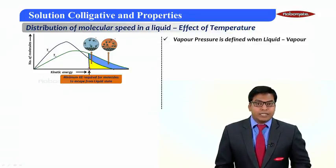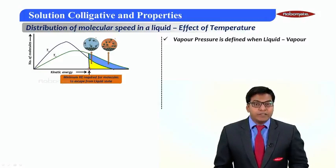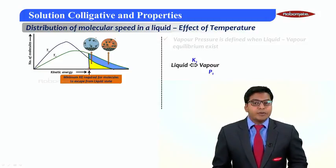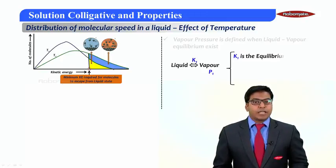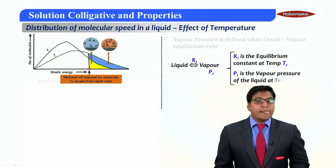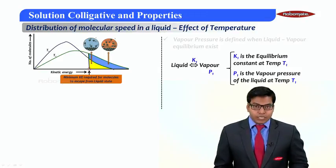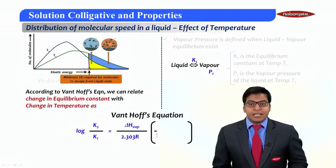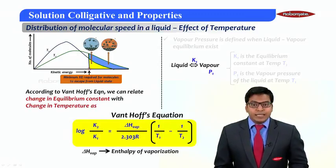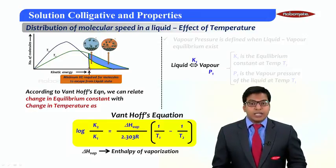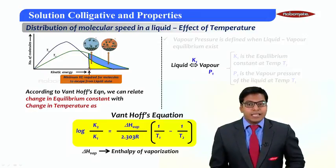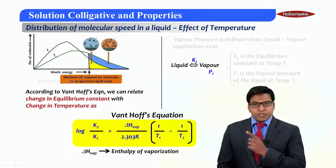Let us try to derive that. Vapor pressure will only be defined when vapor liquid equilibrium is existing. Let me consider that liquid-vapor equilibrium where K1 is the equilibrium constant at temperature T1 and P1 is the vapor pressure of liquid at temperature T1. According to Vant Hoff's equation, we can relate that log of K2 by K1 equals delta H vaporization by 2.303 R into 1 by T1 minus 1 by T2, where delta H vaporization is the enthalpy of vaporization.